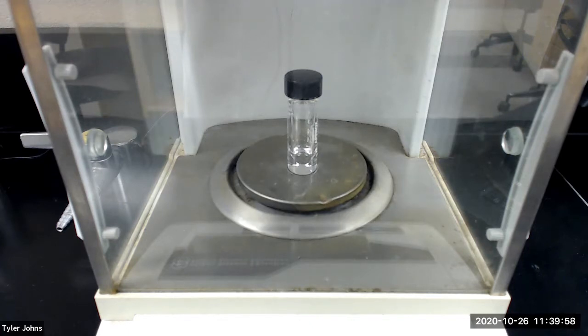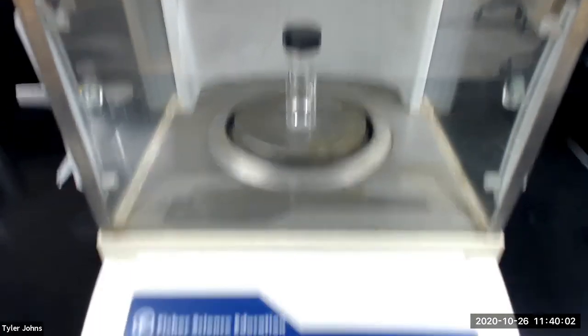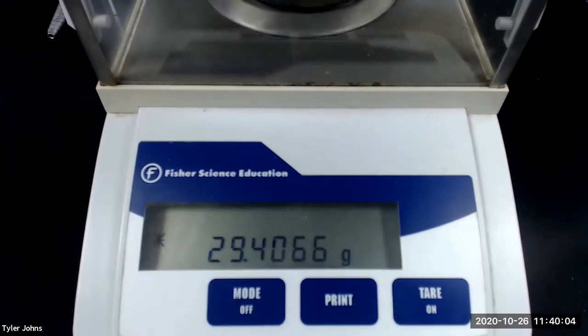The mass of our pre-weighed conical vial plus our T-pentyl chloride distillate is 29.4066 grams.